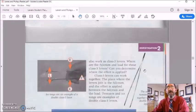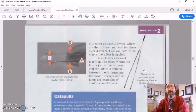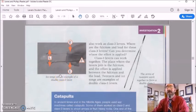Your arms and legs also work as class three levers. Where are the fulcrum and load for these class three levers? Can you determine where the effort is applied? Class three levers can work together. The place where the levers join is the fulcrum and the effort is applied between the fulcrum and the load. Tweezers and ice tongs are examples of double class three levers.